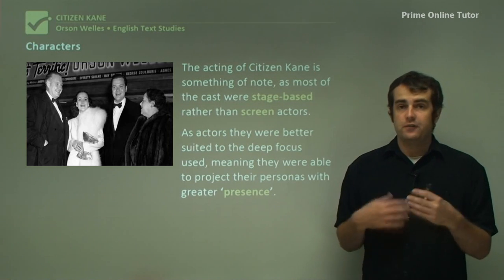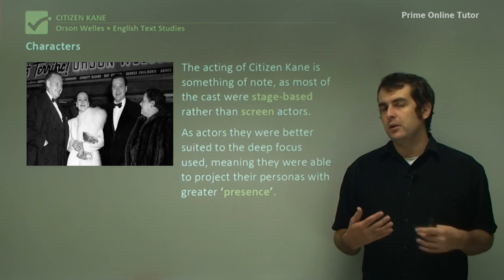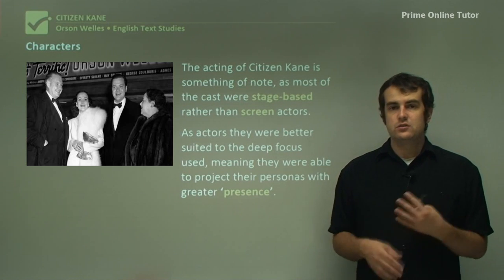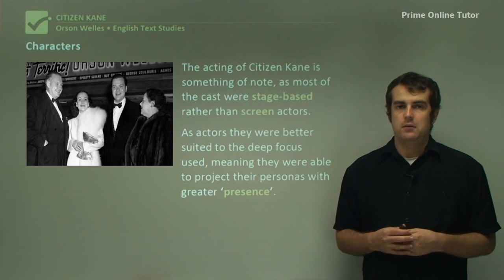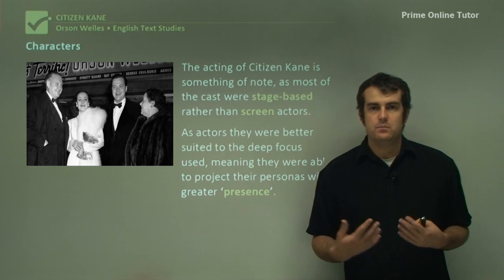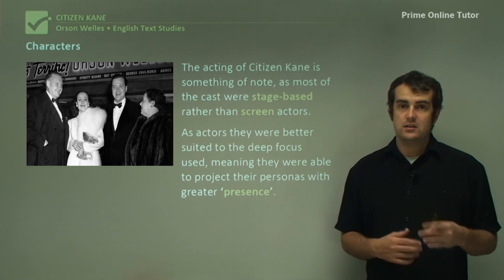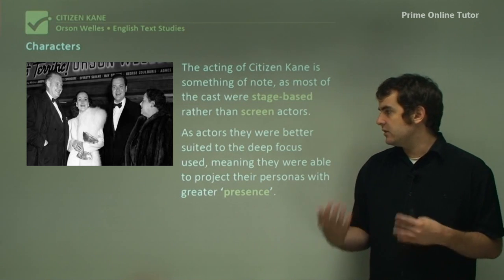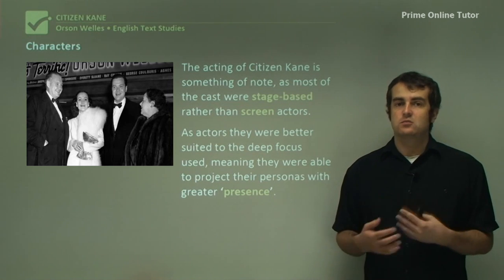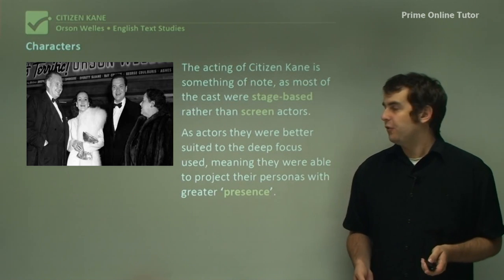A lot of films at the time — and still today — were about close-up shots, and actors had to be very good at playing close-ups. In Citizen Kane, actors were made to perform close-up types of scenes from a number of different distances away, giving their personas much greater presence than a simple close-up shot would provide. This technique persisted for a long time, and now we start to see a more organic sense of filmmaking — which is why many actors today jump between stage and screen.